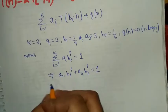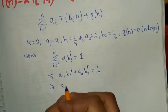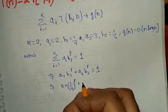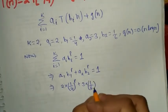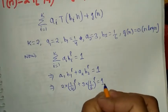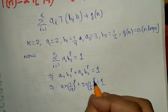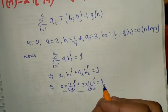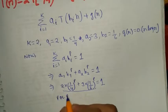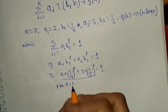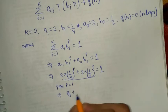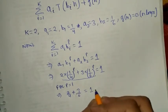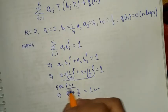Let's put in the values. a1 is 2, b1 is 1/4, so we get 2 times (1/4)^p plus 3 times (1/6)^p equals 1. We need to find the value of p for which this holds. For p equals 1, we get 2/4 plus 3/6 equals 1/2 plus 1/2, which equals 1. So the value of p is 1.